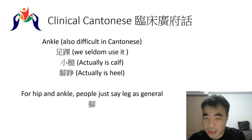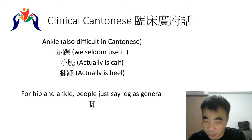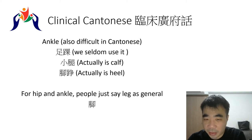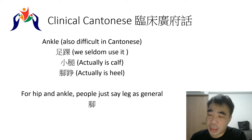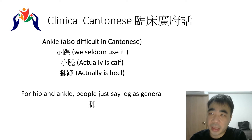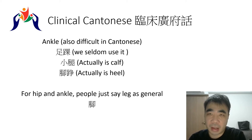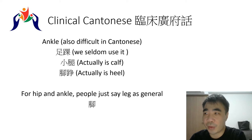For the ankle, people either say 小腿 (siu tui), meaning calf — which is not exactly the ankle — or they say 腳踭 (goek zang), referring to the heel. That's why in Cantonese we seldom say exactly 'hip joint' or 'ankle joint'. It's just like grammar rules — you don't know why, you just follow.